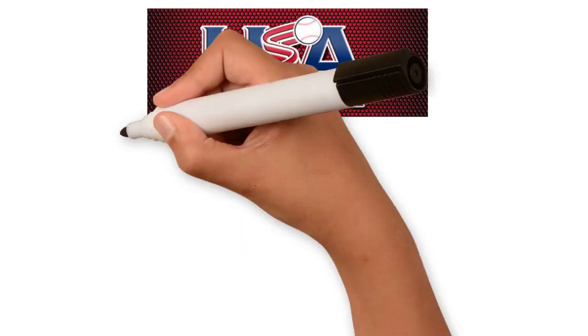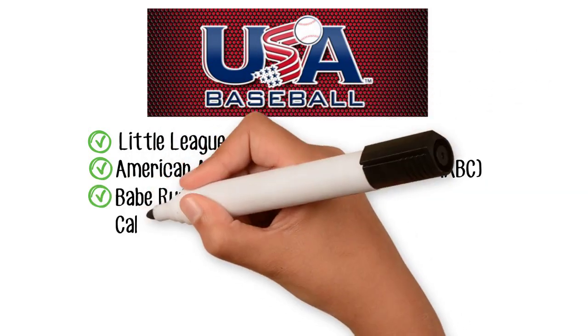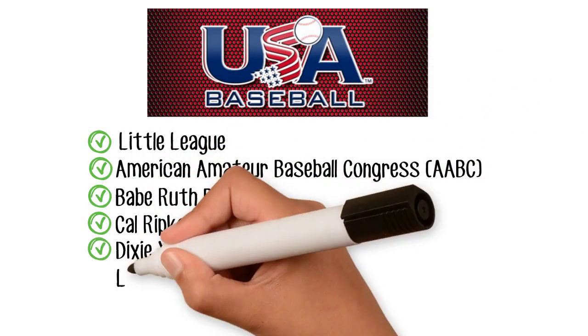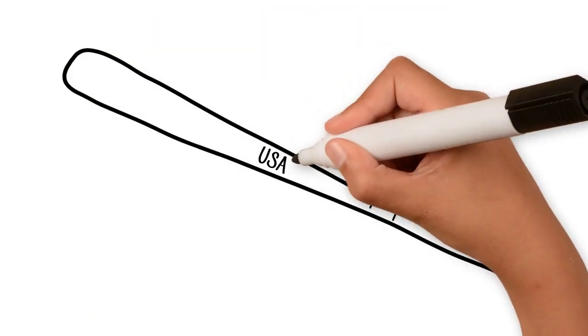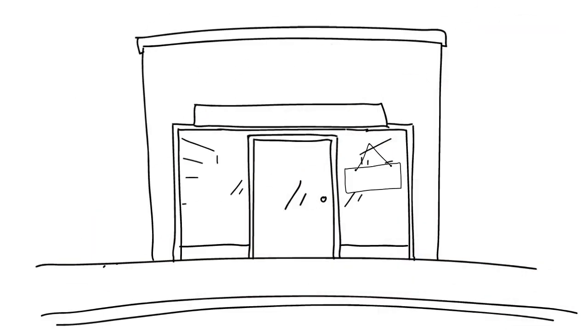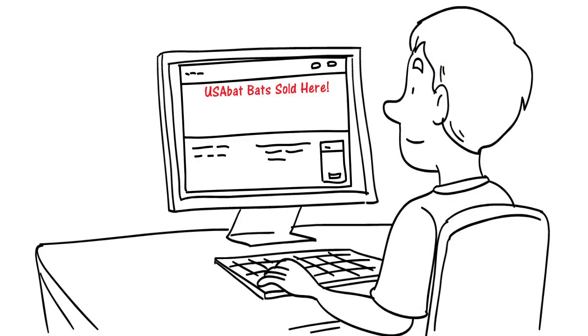Yes. Several leagues are following Little League's new standard and Cal Ripken is one of them. Timmy and all those playing in these leagues need a new bat. These new bats are stamped USA bat on the side. Instead of buying a BPF 1.15 bat, Timmy will need a USA bat next year.